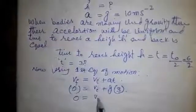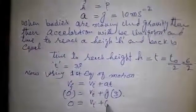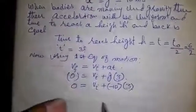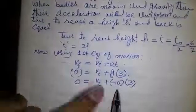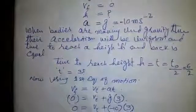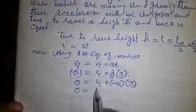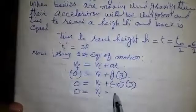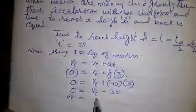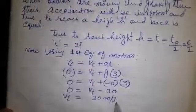0 equals Vi plus minus 10 into 3, because the ball is thrown upward so its acceleration is negative. 0 equals Vi minus 30, or Vi equals 30 meter per second.